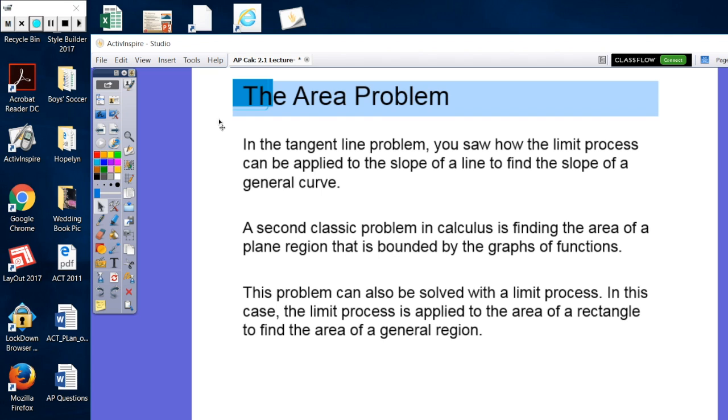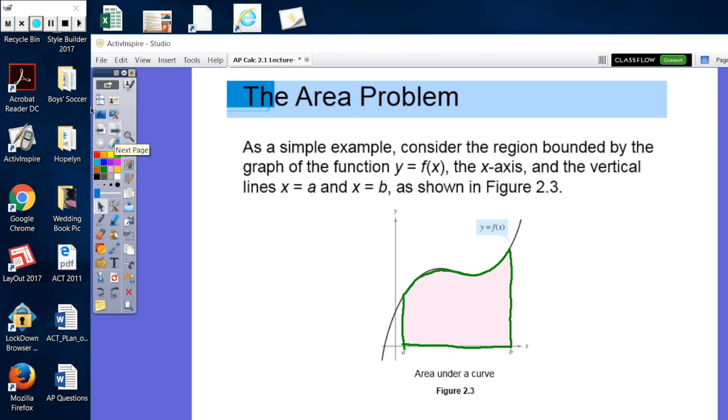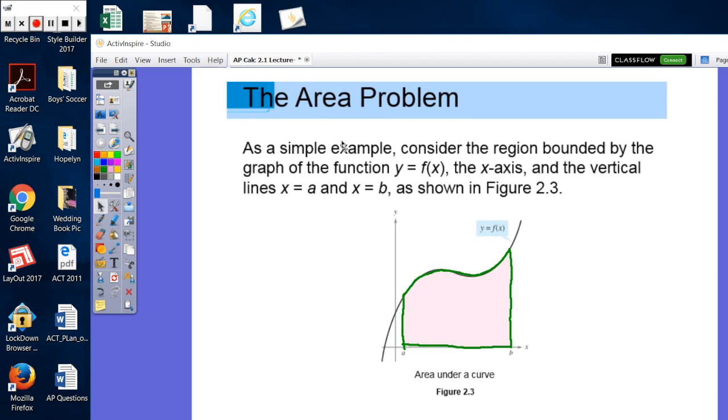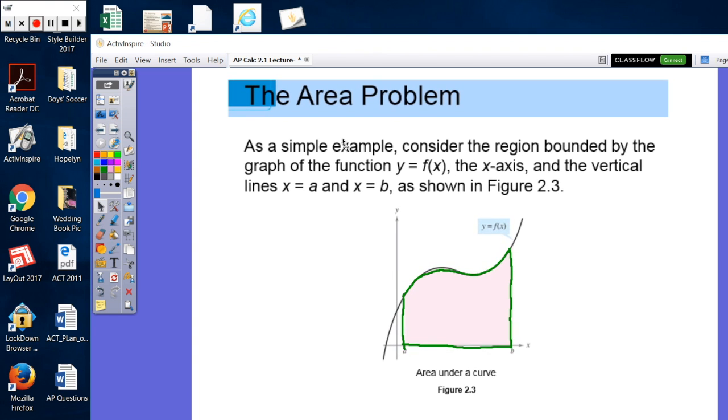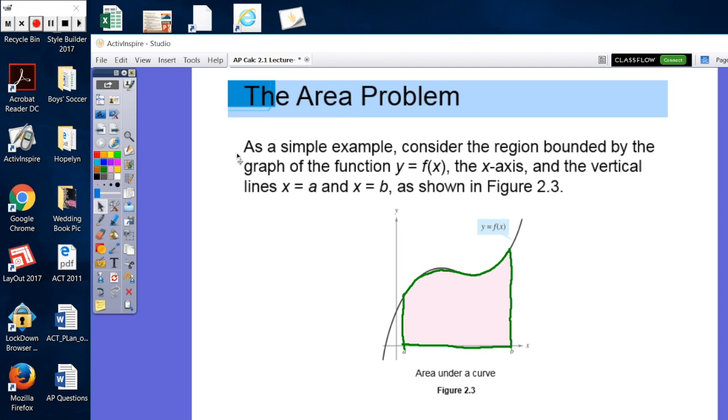So we have found area very often in geometry. You know how to find the area of a rectangle, of a triangle, of a circle, all those fun things. Here it's a little bit different. So as a simple example, consider the region bounded by the graph of the function y equals f of x. As you can see, it is an unknown function for us. The x-axis and the vertical lines x equal to a and x equal to b.